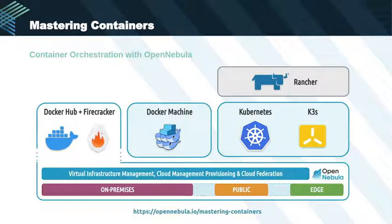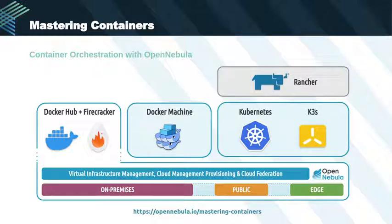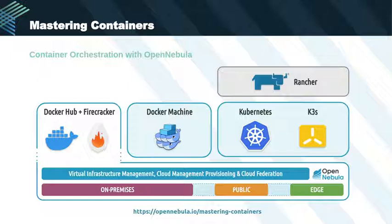Now let's look at how containers are managed within OpenNebula. OpenNebula provides different ways to integrate containerized applications. First, OpenNebula provides a Kubernetes appliance available from the OpenNebula marketplace where you can create and deploy Kubernetes clusters. Every node is managed by OpenNebula as a regular virtual machine, but OpenNebula doesn't manage containers or pods inside the Kubernetes cluster — it just exposes the Kubernetes API so you can access it via kubectl or a dashboard. You can also use the OpenNebula Docker Machine driver for creating Kubernetes clusters using the Rancher UI, where you can create pools of nodes based on a node template that defines the parameters used to launch nodes in OpenNebula.